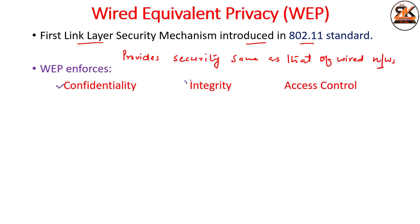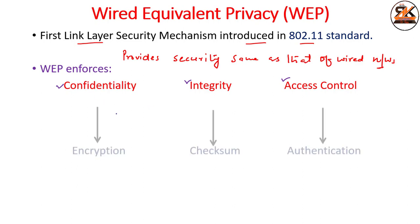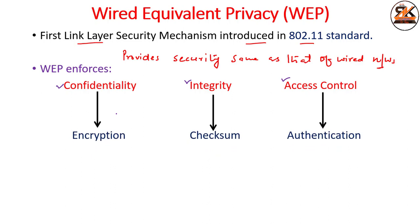Those features are confidentiality, integrity, and access control. Confidentiality means we have encryption. Integrity means we have some checksum kind of mechanism. Access control means authentication. All the necessary features required for the security of data are included in WEP, and WEP enforces these with the help of certain parameters: encryption for confidentiality, a checksum mechanism for integrity, and authentication for access control.